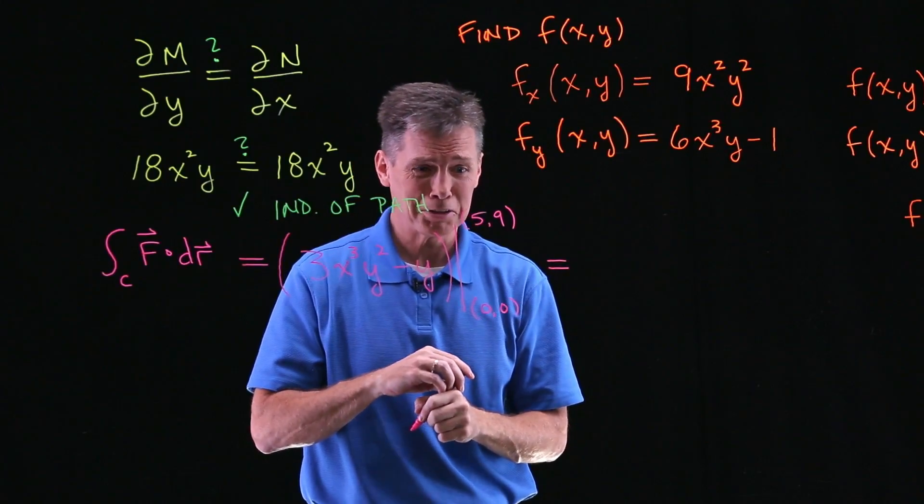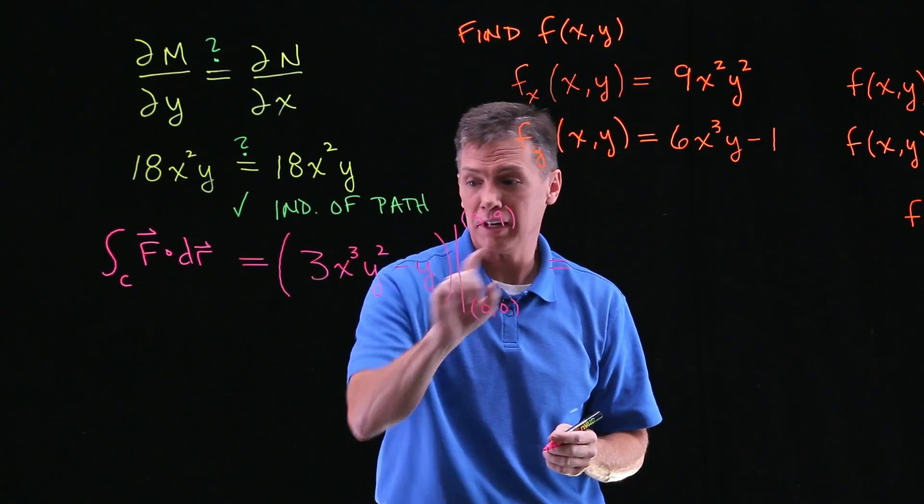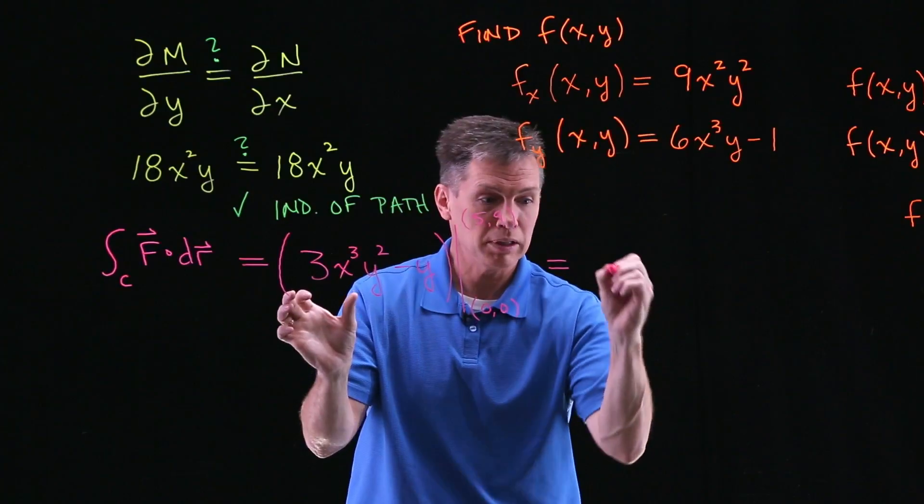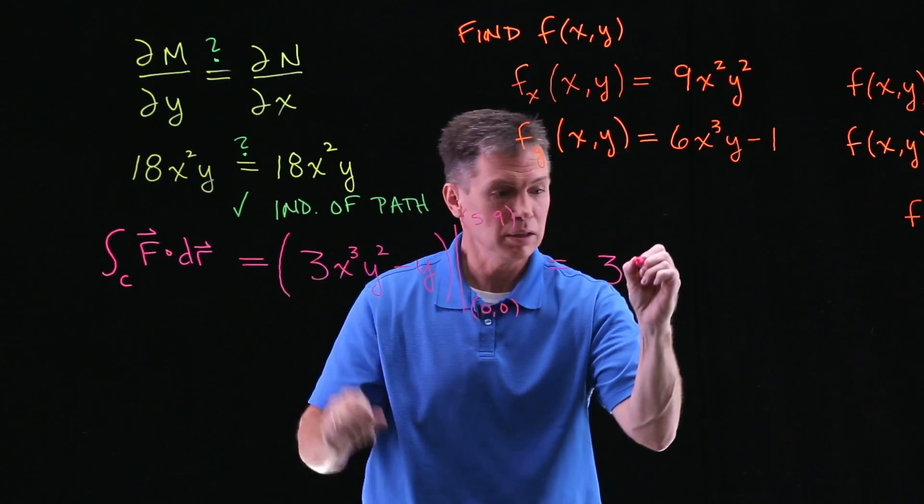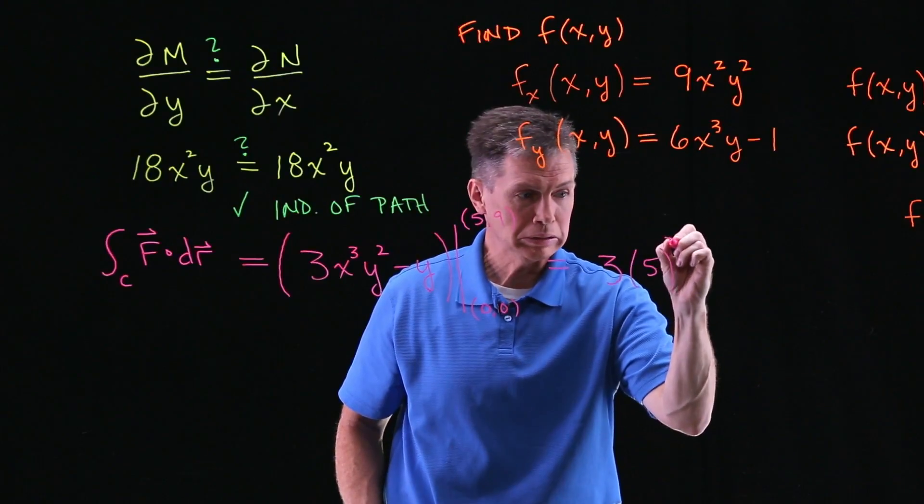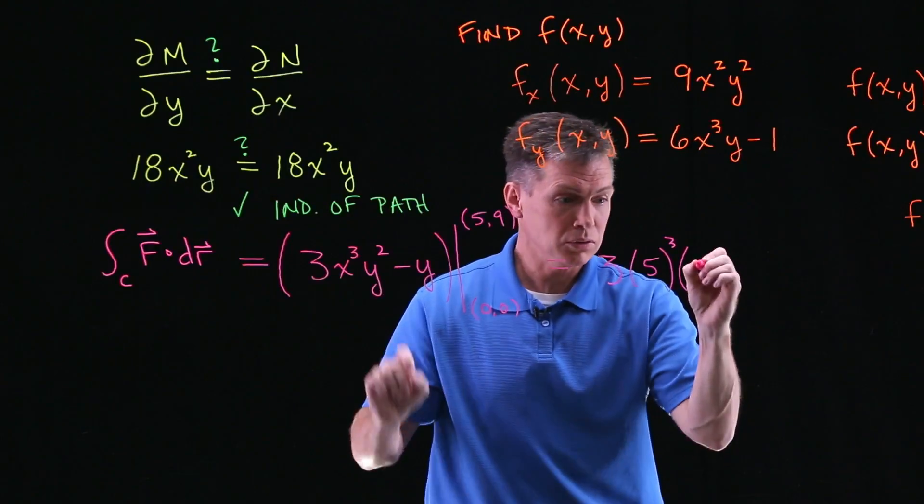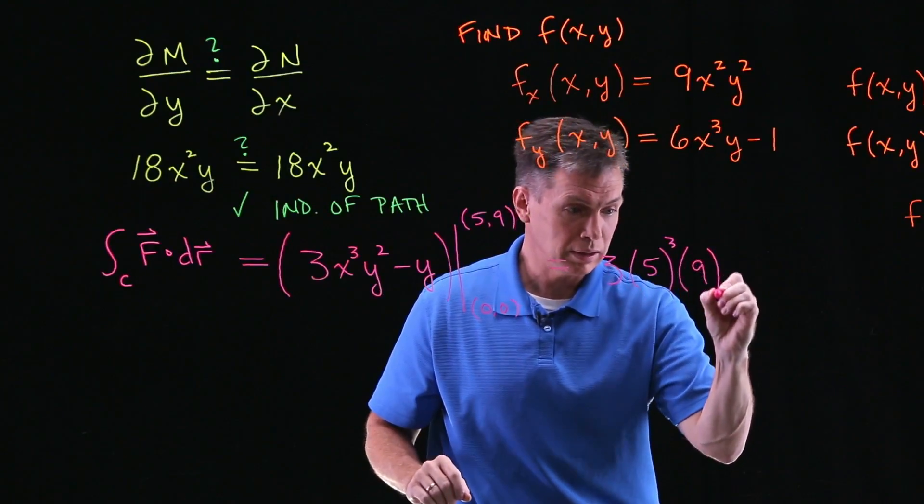Now you just plug and chug. So let's plug this in. Maybe I should have warned you ahead of time, I'm going to jump to a calculator for the plug and chug. The numbers get kind of big. I'm going to plug in 5,9, 5 for X, 9 for Y, so 3 times 5³.